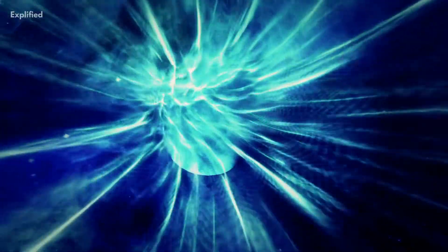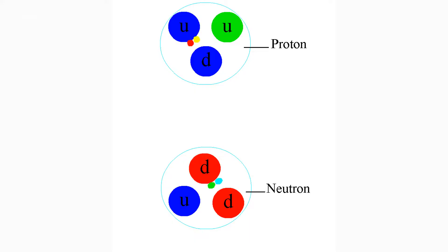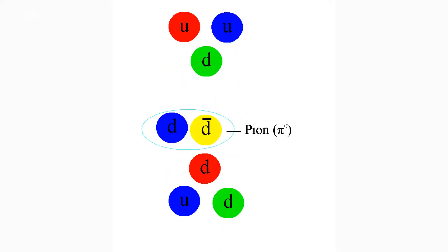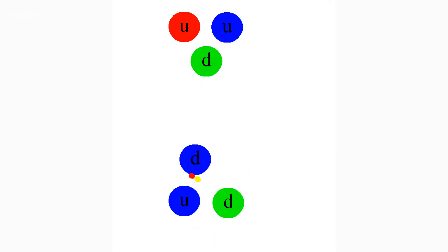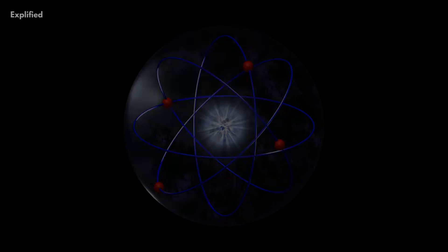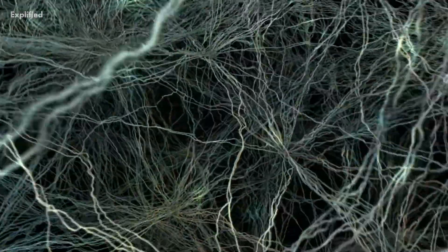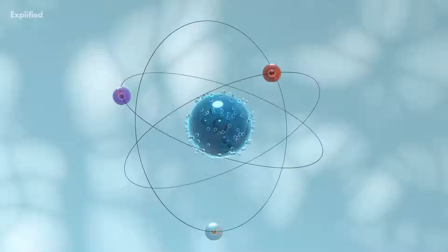So, how does the strong force work? This is where gluons come in. Gluons are particles that carry the strong force between protons and neutrons. They are exchanged between particles in the nucleus, binding them together and maintaining the stability of the nucleus.